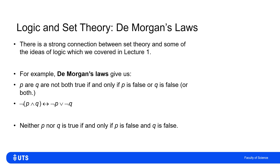The other of De Morgan's laws tells us that neither P nor Q being true is the same as P is false AND Q is false. So NOT (P OR Q) is logically equivalent to (NOT P) AND (NOT Q).